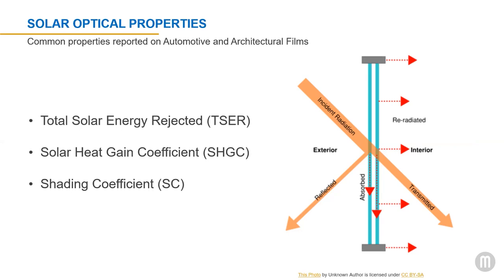Shading coefficient is similar to solar heat gain but with differences. It's the ratio of solar gain due to direct sunlight passing through a glass unit to the solar energy that passes through a standard 1/8-inch thick clear float glass. The difference: SHGC is a percentage of solar energy incident on the glass that's transmitted indoors both directly and indirectly through glass. The shading coefficient measures heat gain through the glass from solar radiation but does not account for absorption and re-radiation. Both measure heat transfer through the window, but slightly differently.